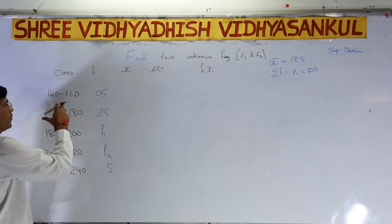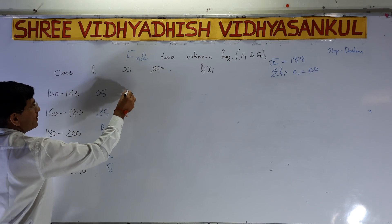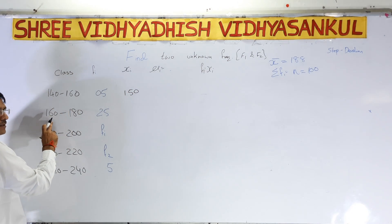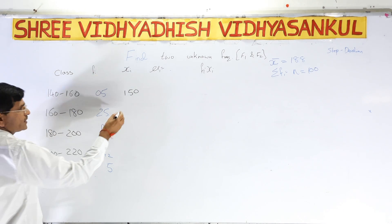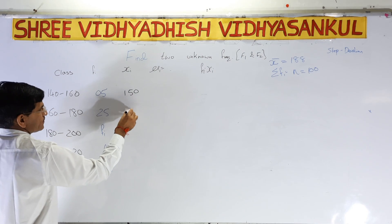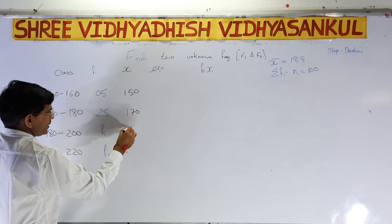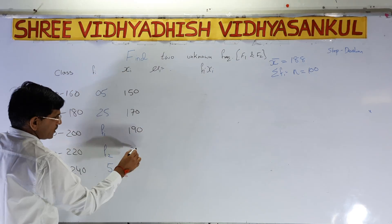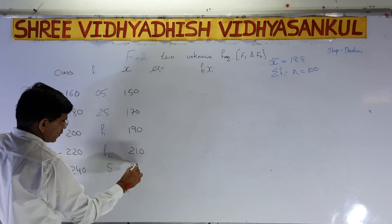To find xi (midpoints): for 160–180, (160+180)/2 = 170. The class width (h) = 20. Adding 20 each time: 150, 170, 190, 210, 230. The difference between consecutive midpoints is 20.